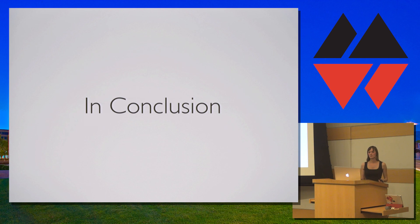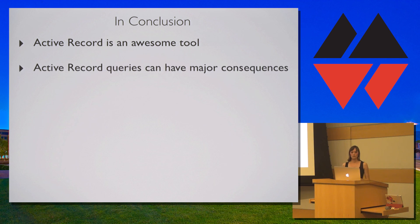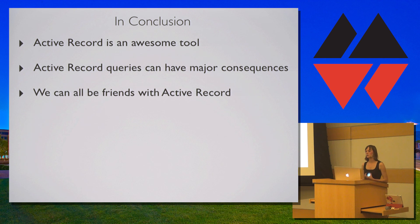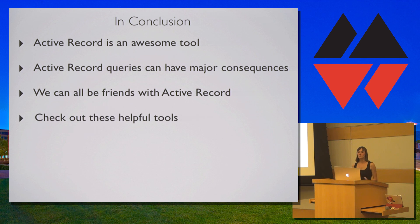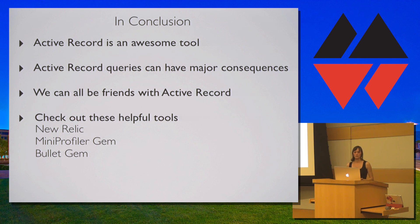So what have we learned? ActiveRecord is a great tool, but we shouldn't let its magical properties make us lazy. Our assumptions about ActiveRecord can have major consequences when we aren't paying close attention to how our queries translate into SQL — especially true with large datasets. There are great tools to help you profile queries: NewRelic can identify slow SQL queries consuming memory; MiniProfiler adds a badge to your application recording queries from the database; and the Bullet gem identifies N+1 queries and notifies you when you should add eager loading. Thanks everyone.